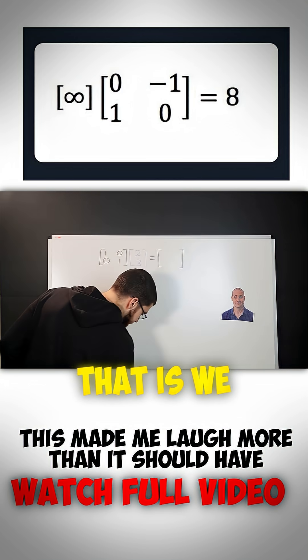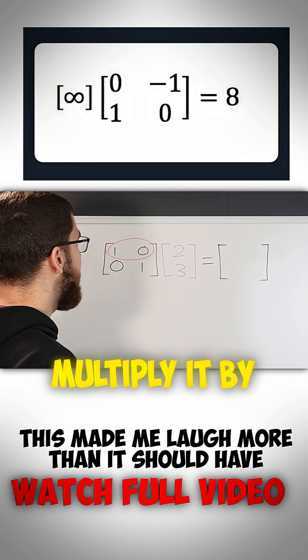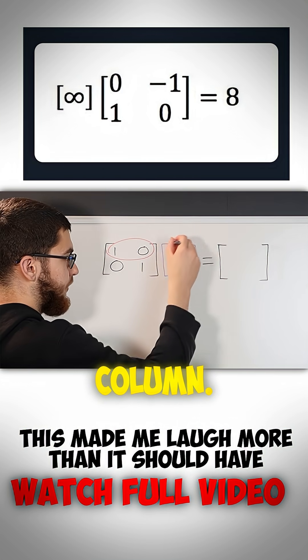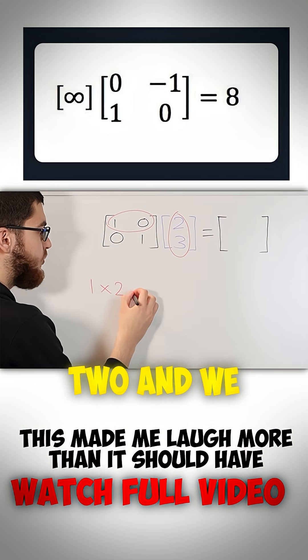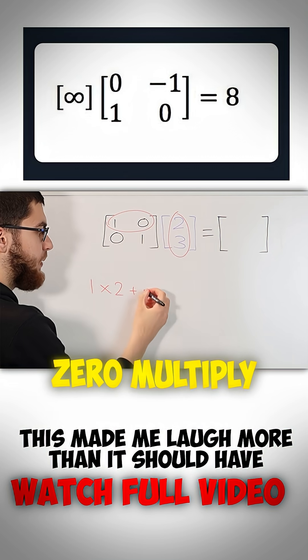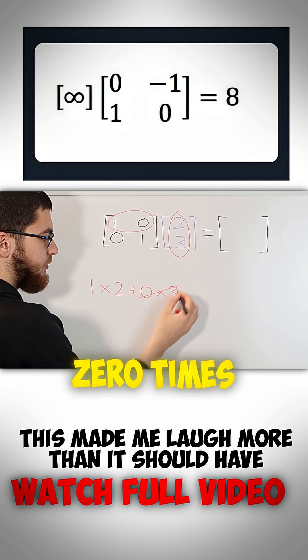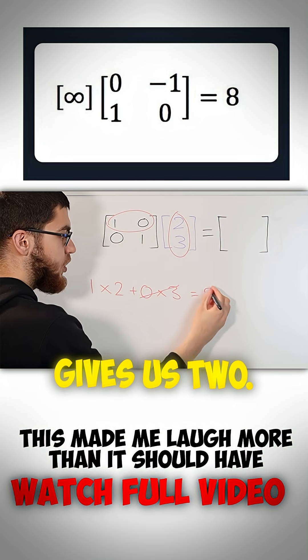how we do that is we take the first row, and we multiply it by the first column. So we take 1 multiplied by 2, and we add 0 multiplied by 3. So 0 times 3 is 0, 1 times 2 gives us 2.